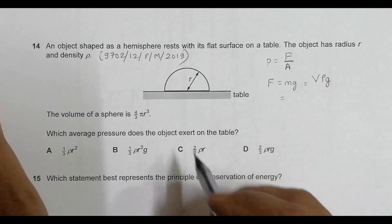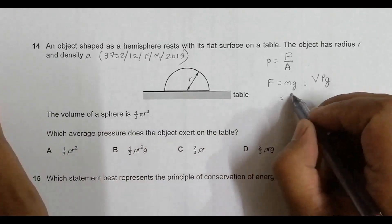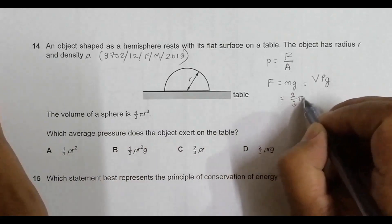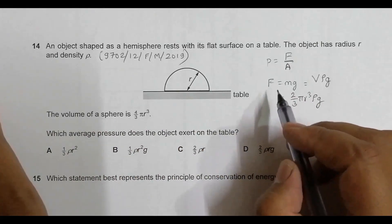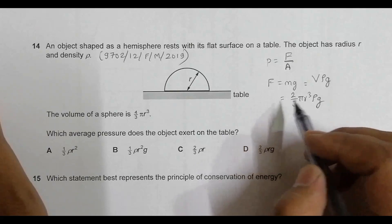The volume of a hemisphere is half the volume of a whole sphere, which equals 2/3πr³. Then multiply by ρ and g. This is the downward force exerted by the hemisphere on the table.